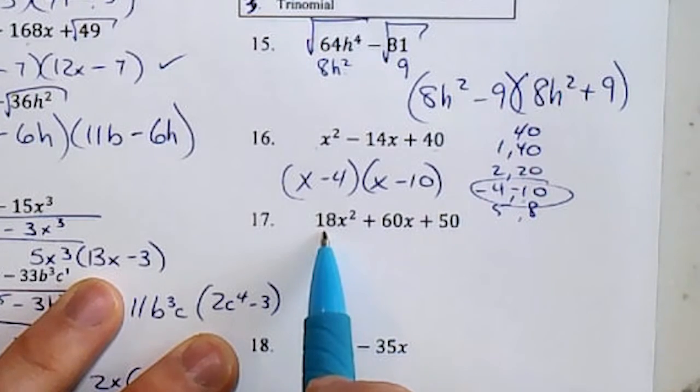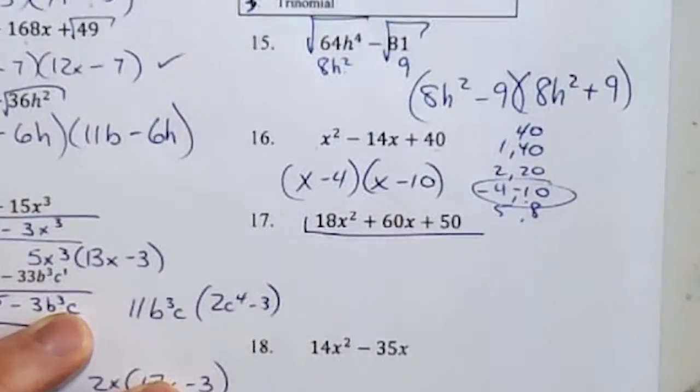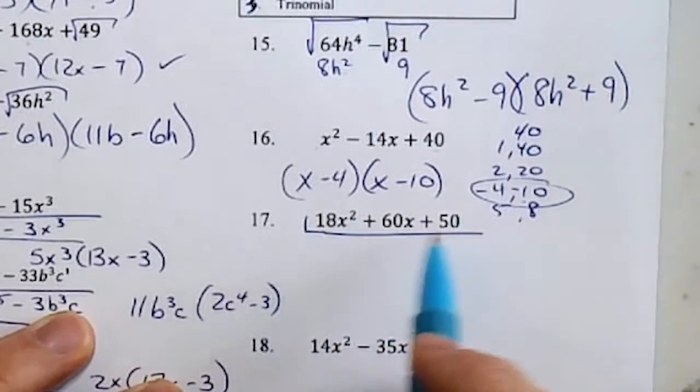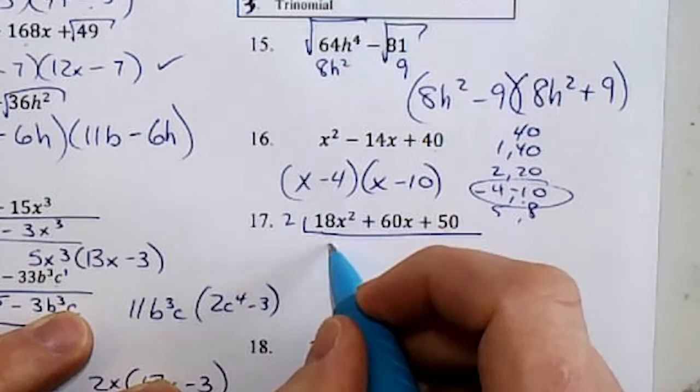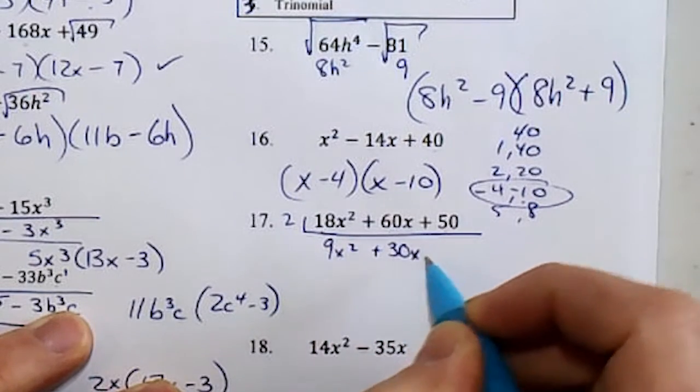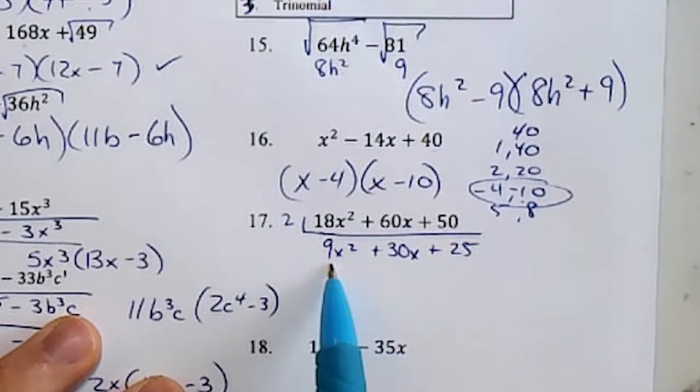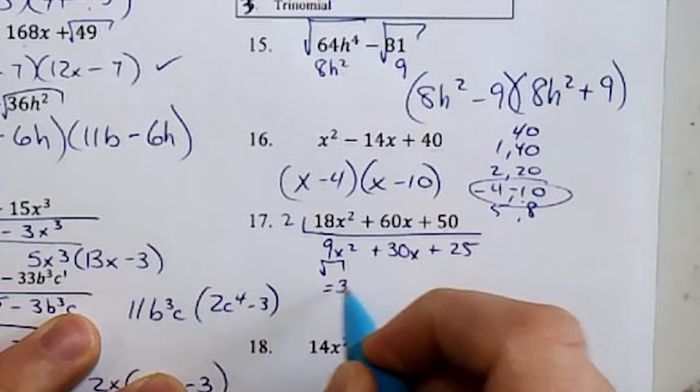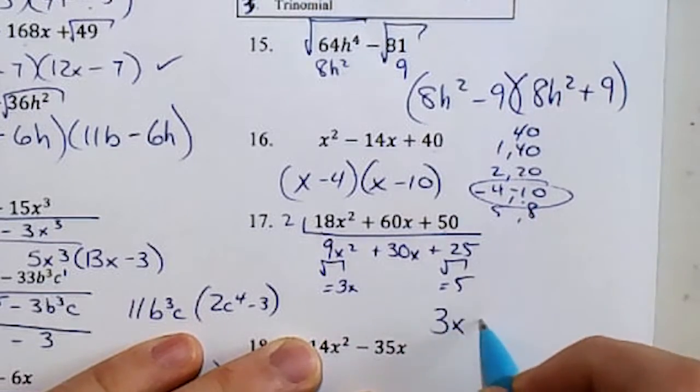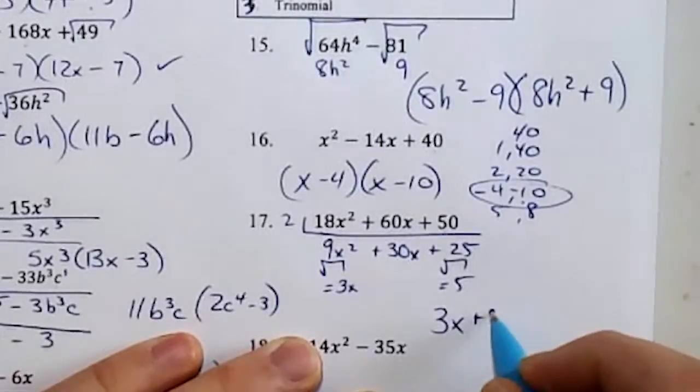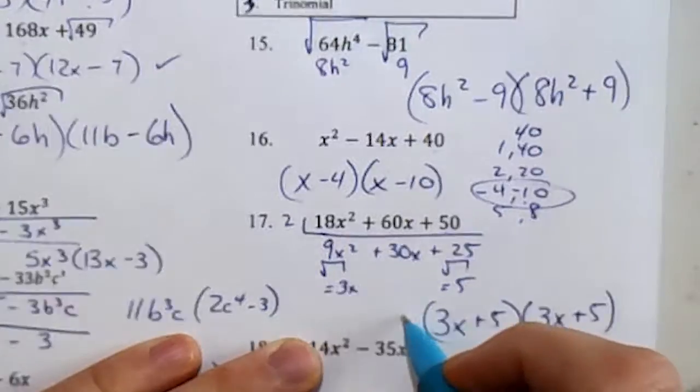This one here, start with GCF. And I can see right away, they're all even. If I look, 3 does not go into 50, but 2 goes into all of them. And now I see right away perfect squares on the end. So I've got 3x and 5. And the middle is positive, so both are positive. And don't forget, a GCF must go in front.